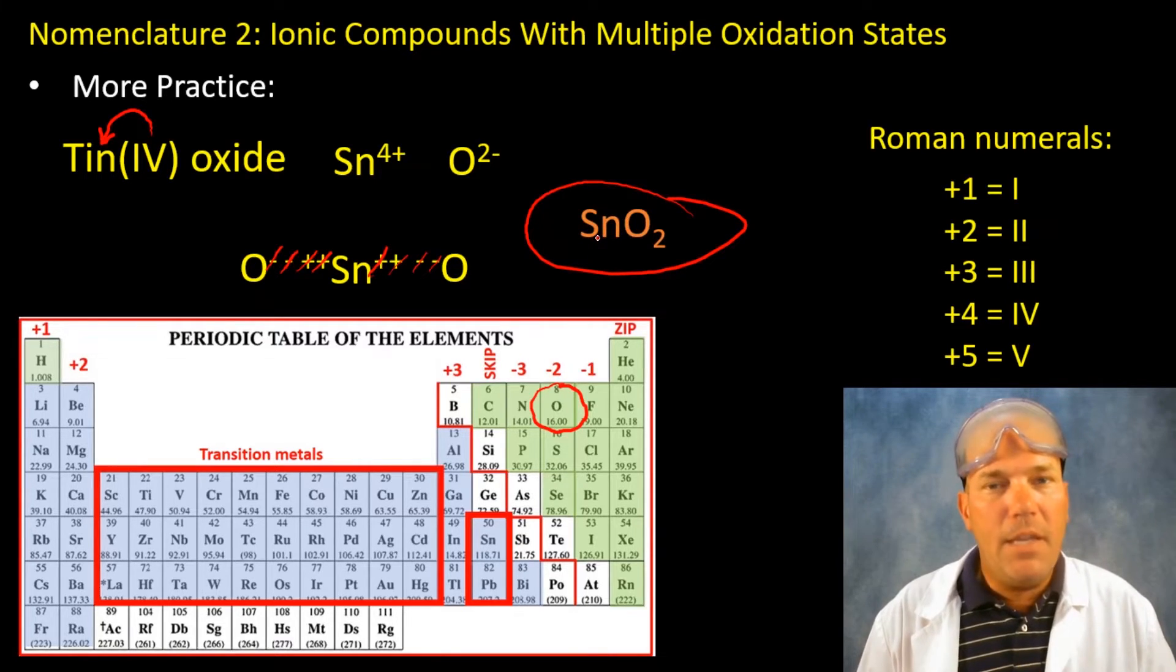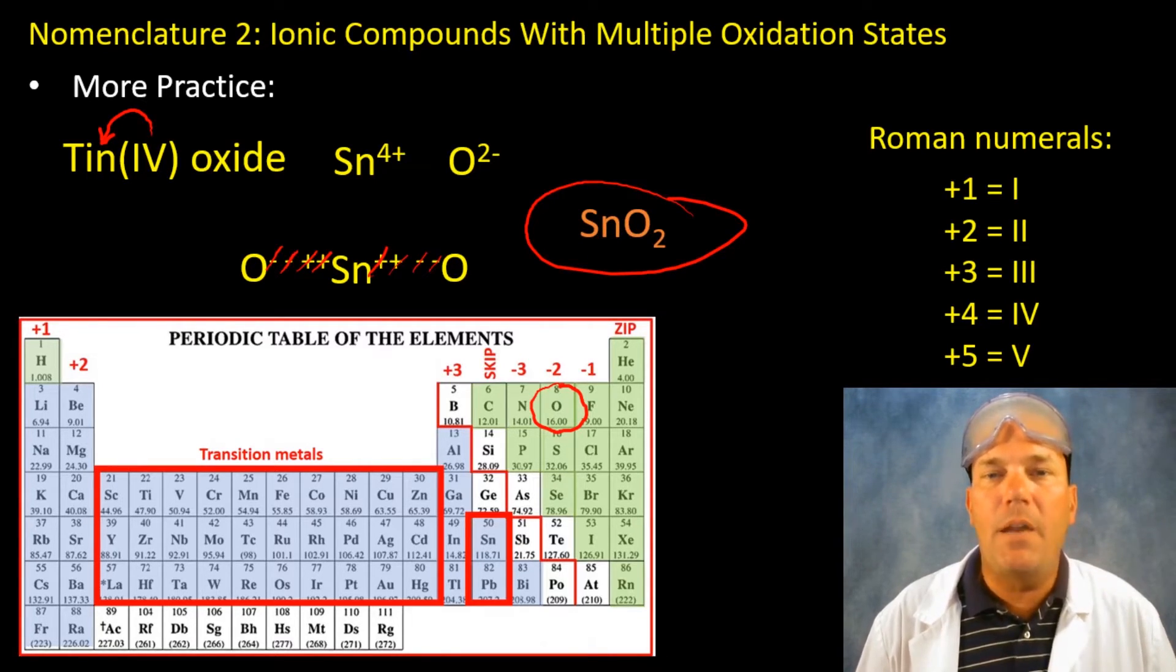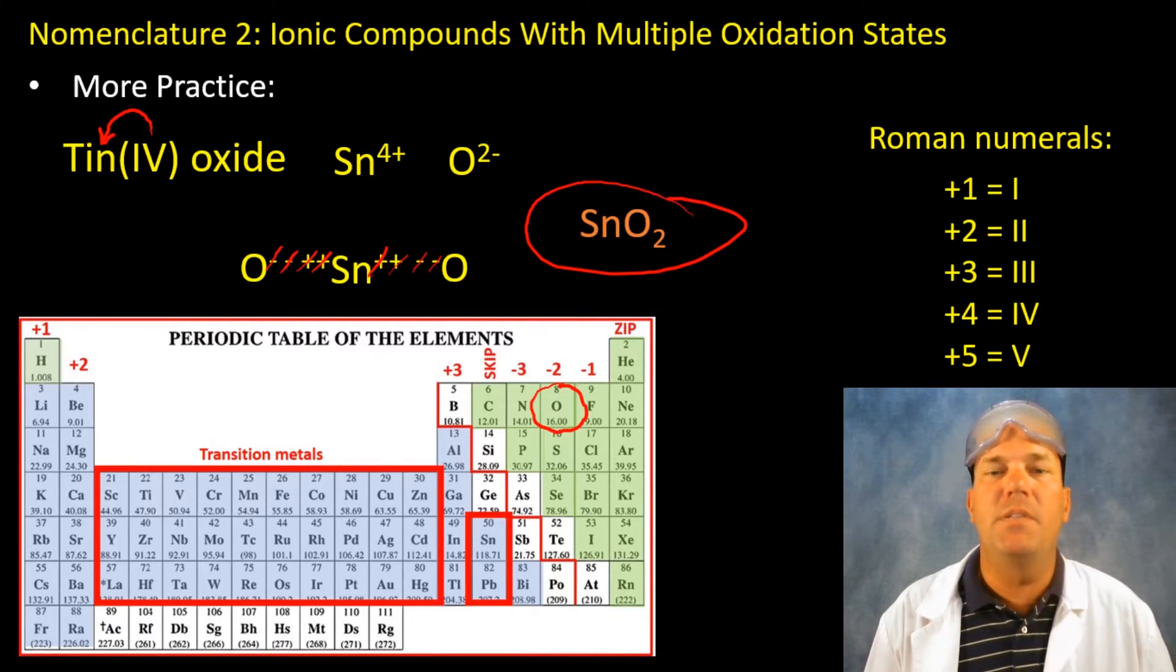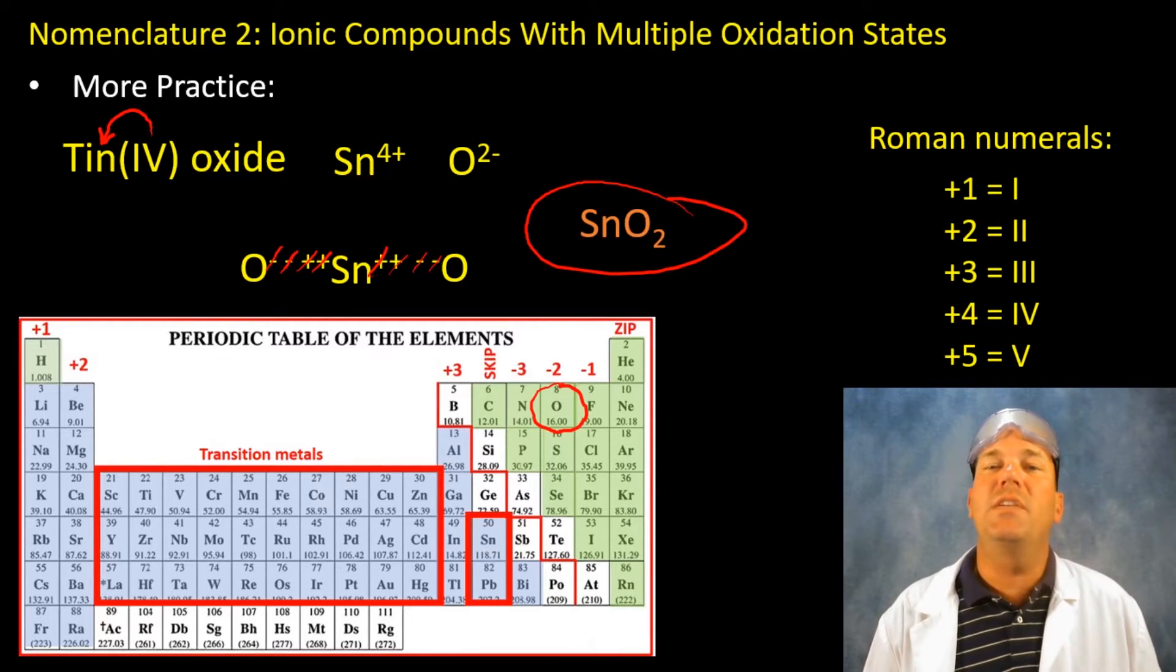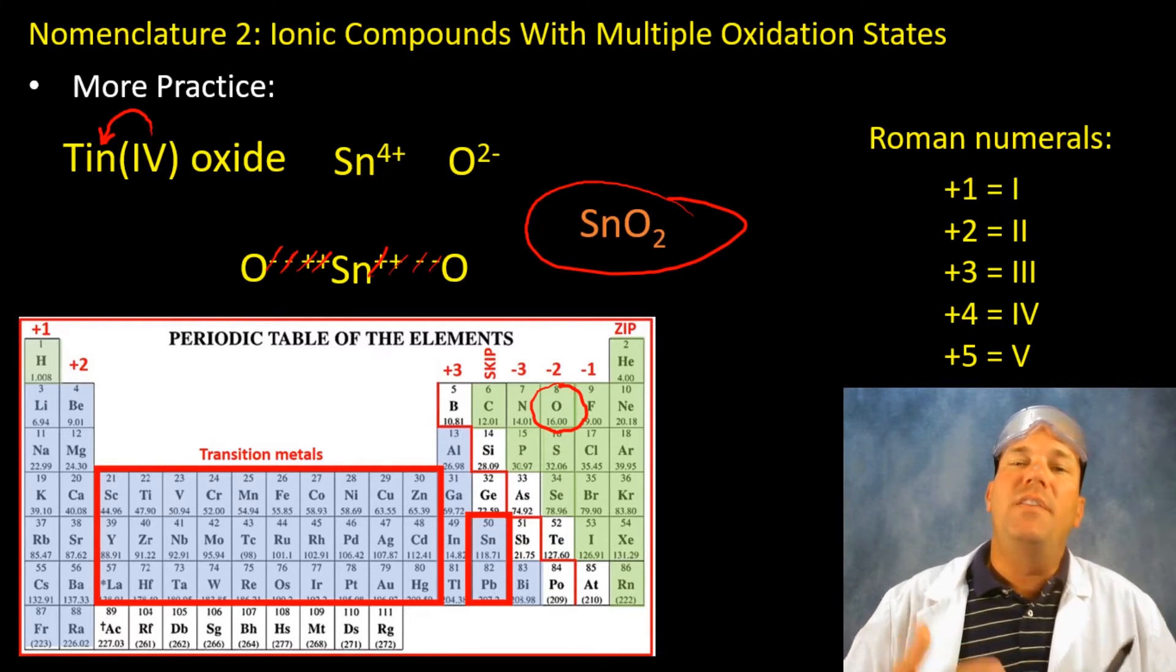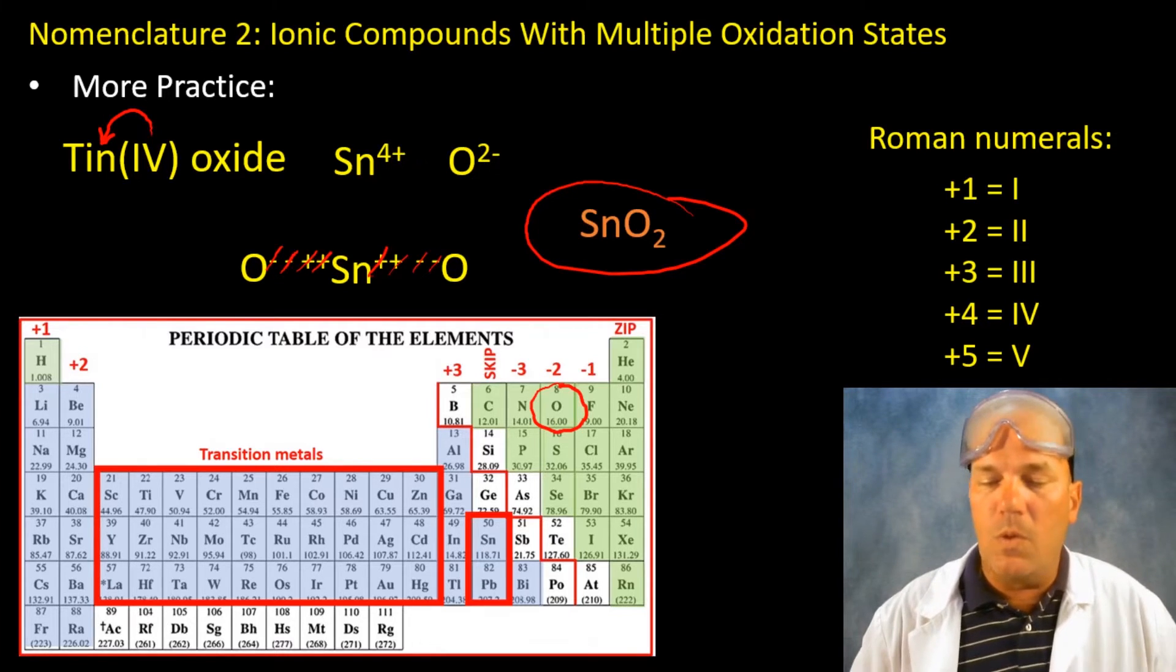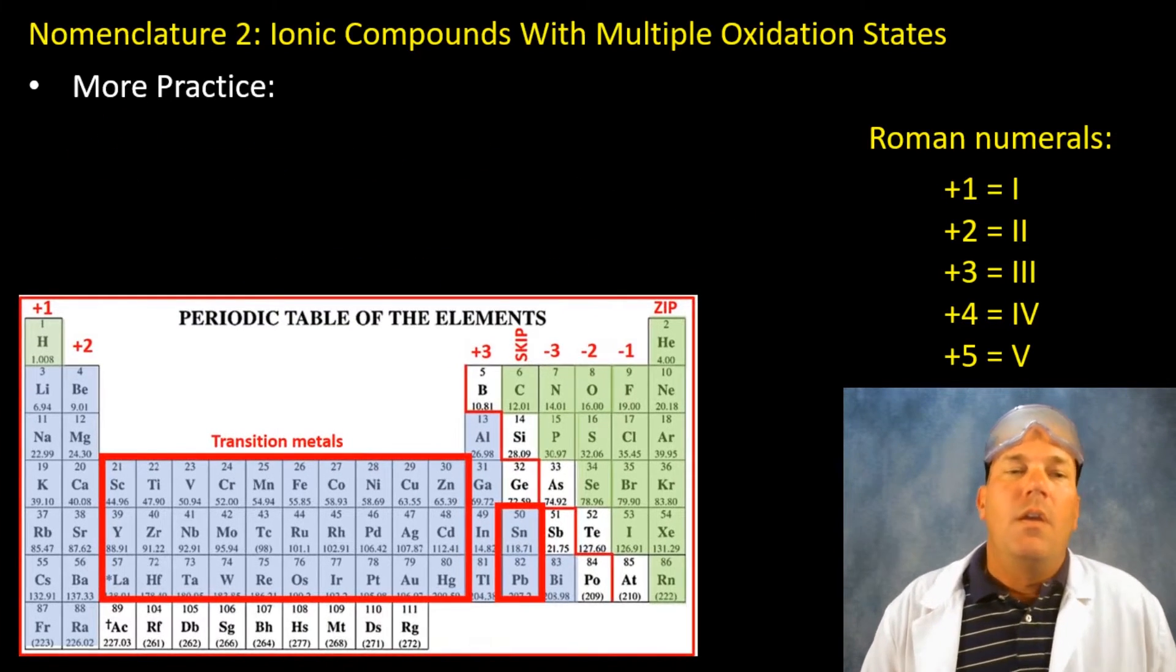The written correct formula for tin four oxide is SnO2. Okay. So again pause this video, think about it for a minute. One of the most common misconceptions in nomenclature and a mistake that really causes problems and difficulties later on in the course.